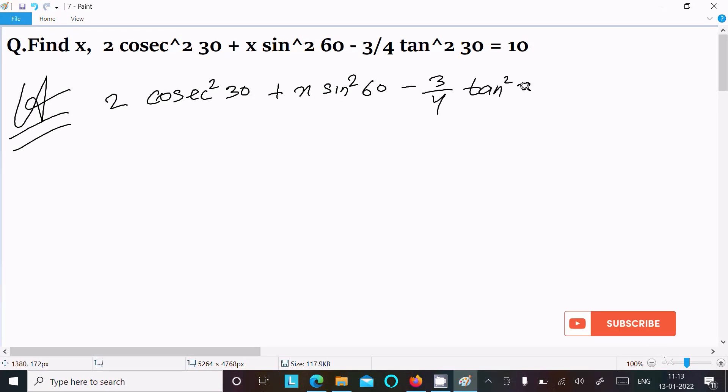So we know the value of cosec 30, that is 2, and the power 2 comes here. Then x sin 60, we know that's √3/2.